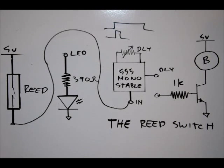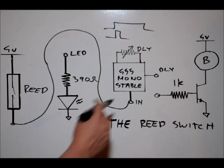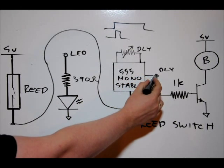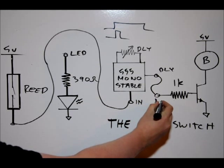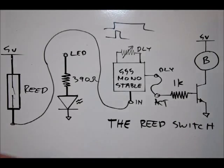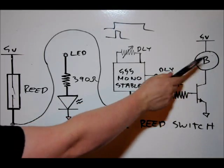After we're done that, we're going to take the DLY output from the 555 timer and connect it to our ACT pin. And that's our actuator pin, and we've got a transistor driver here. We can drive a relay, a buzzer, or a motor.